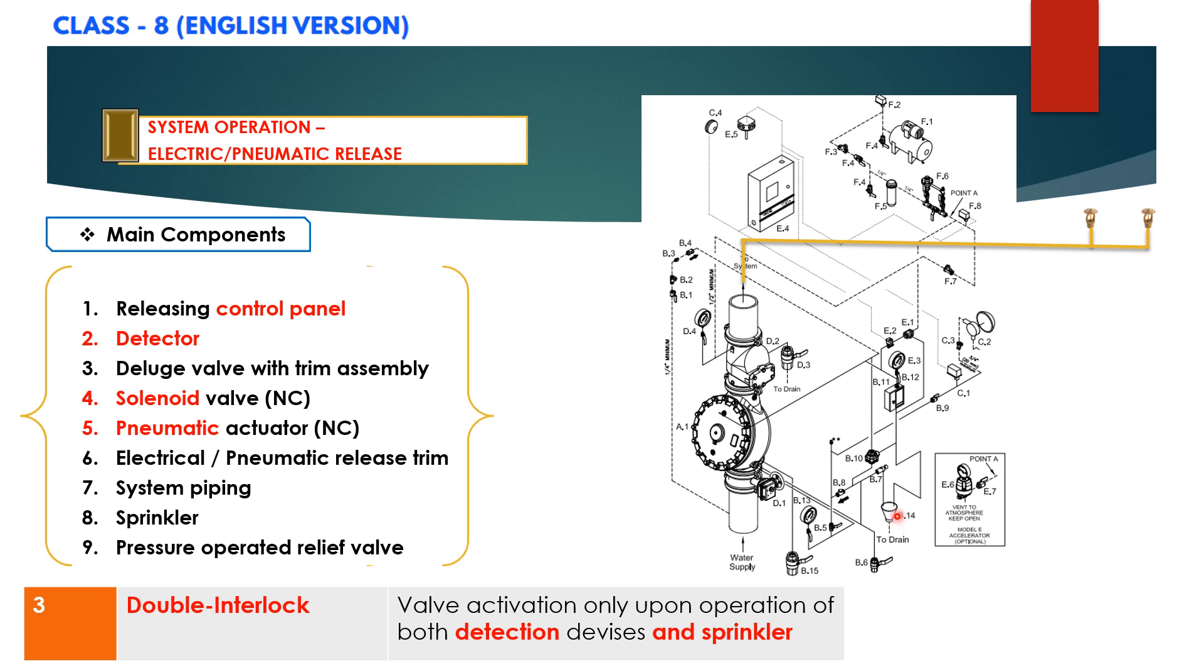When the PORV operates, it continually vents the priming chamber to prevent the deluge valve from resetting even if the open releasing devices close.